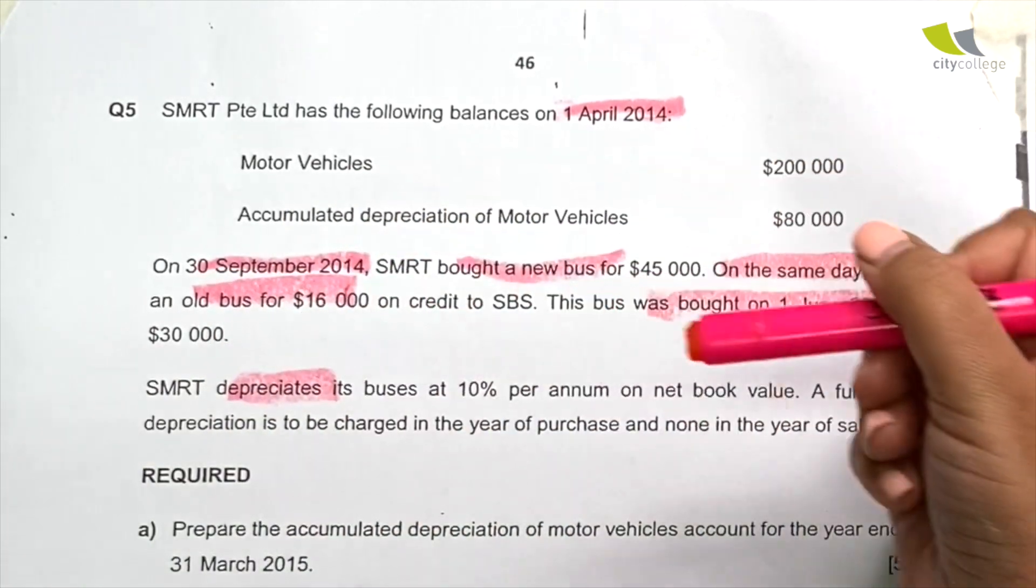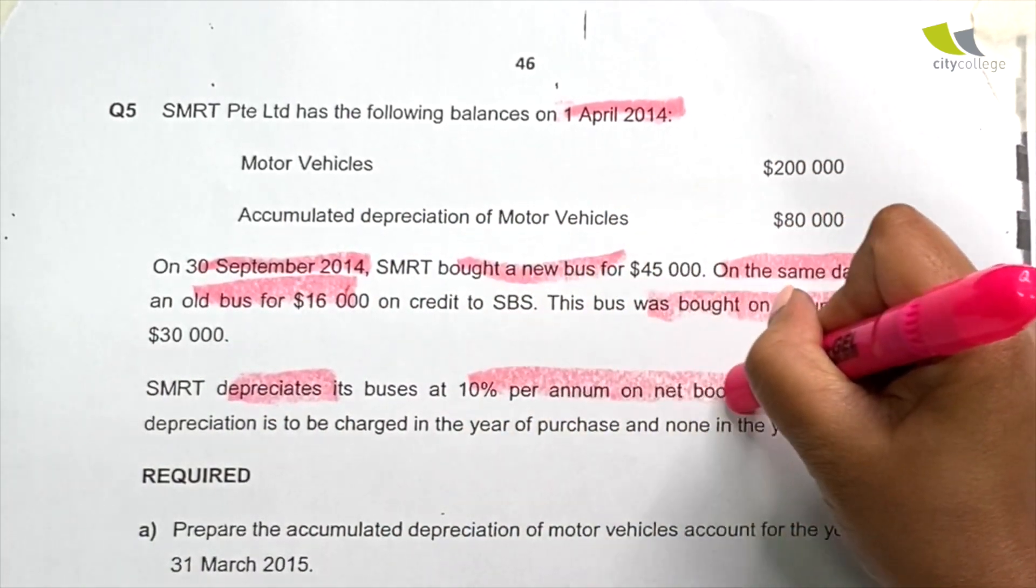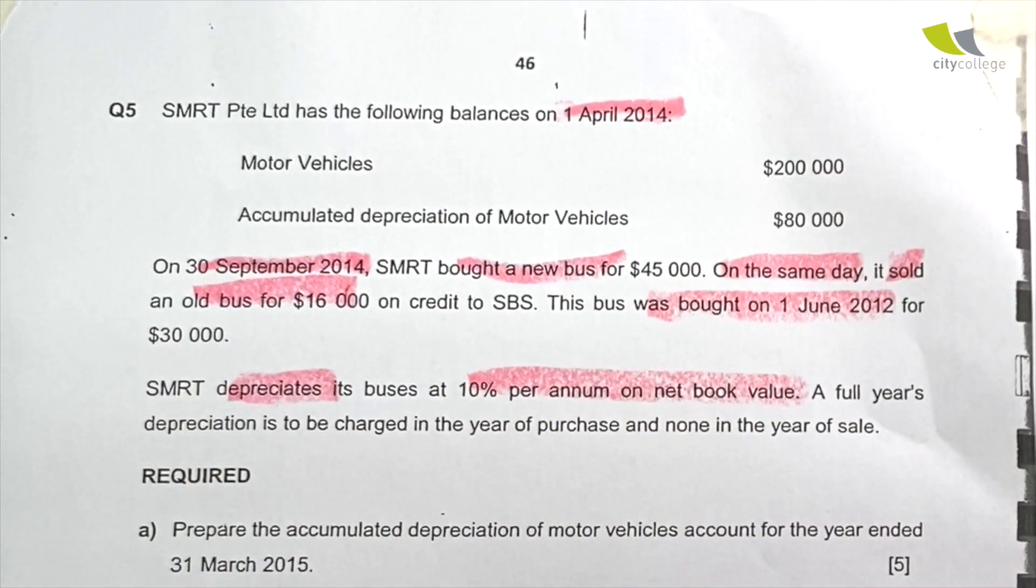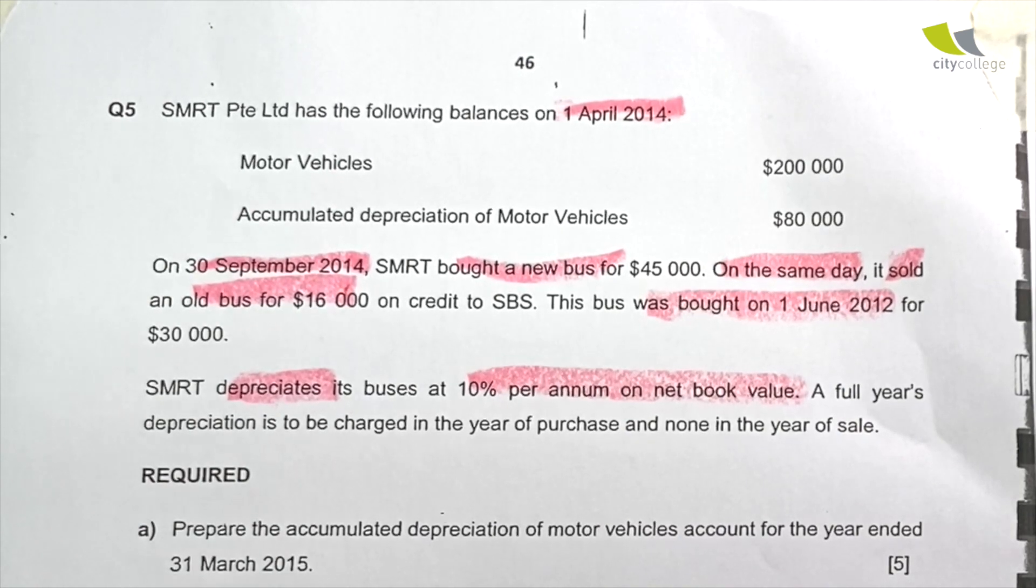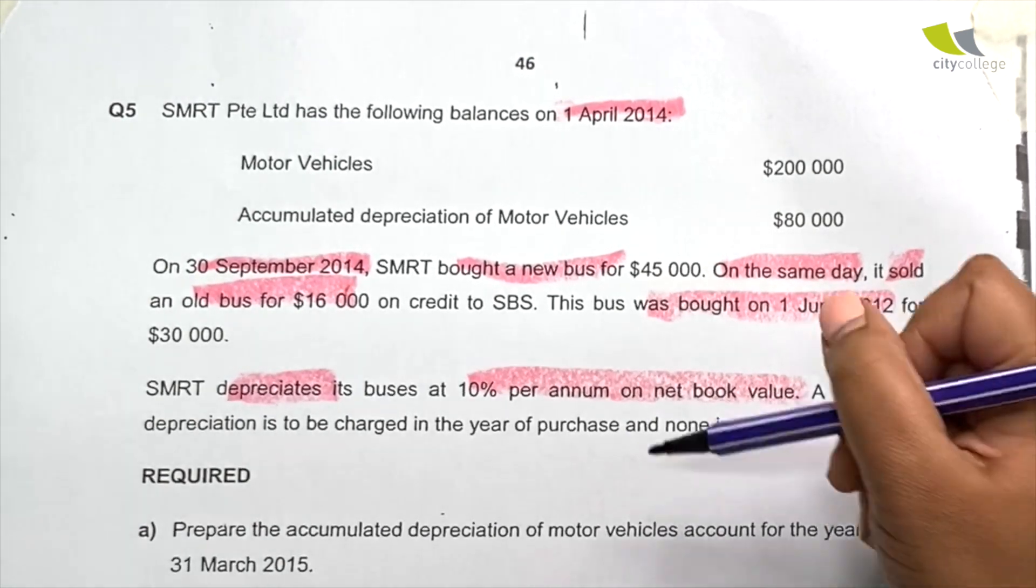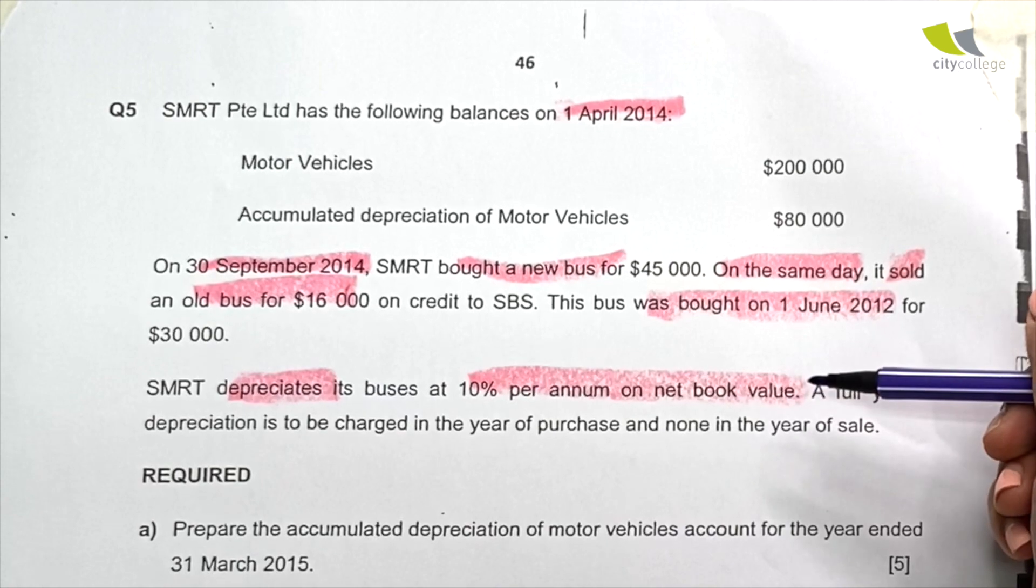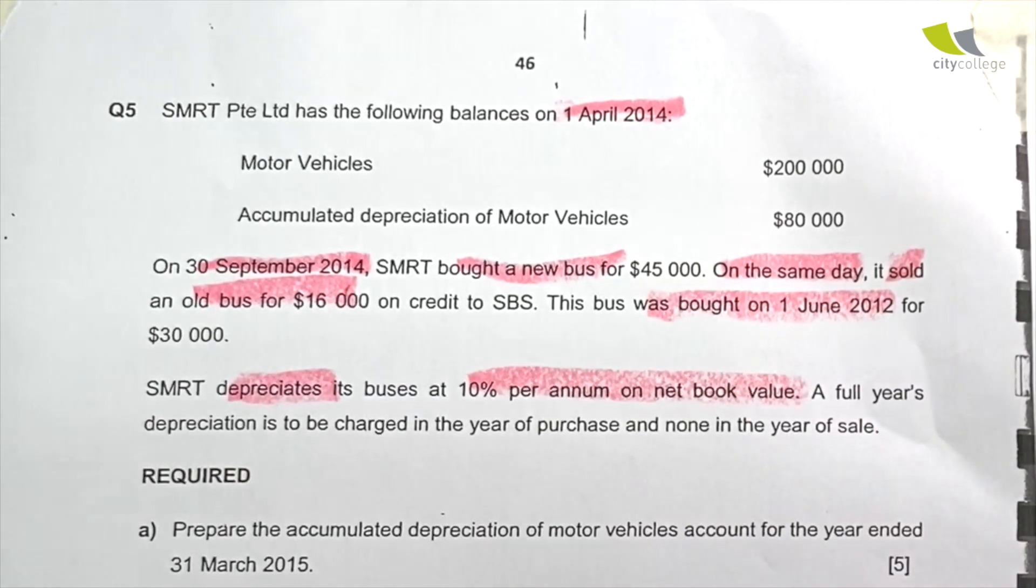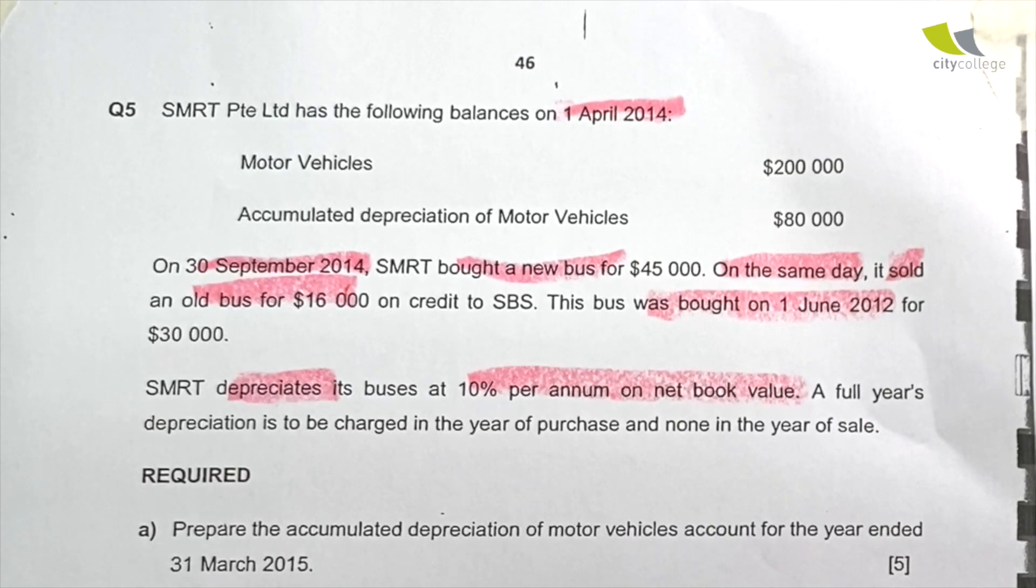SMRT depreciates its buses at 10% per annum on net book value. Let's just stop there and ask ourselves, what does net book value actually mean?